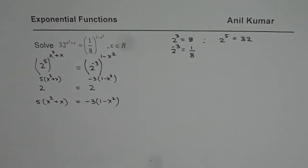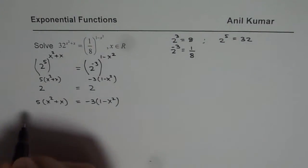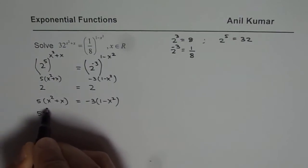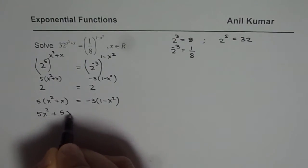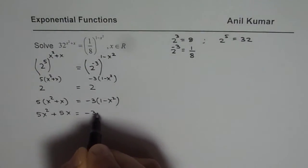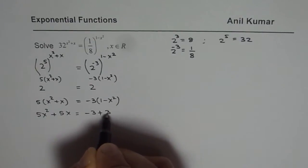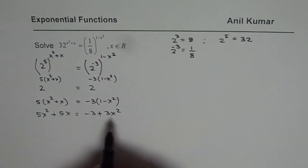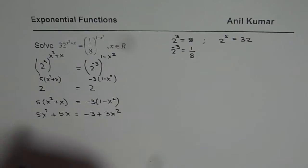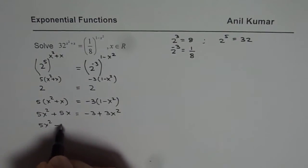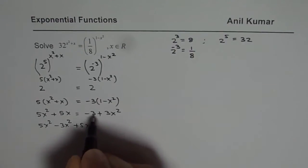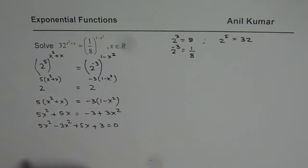So we get a quadratic equation to solve. Let us now solve this quadratic equation. Expand: 5x square plus 5x equals to minus 3, minus minus becomes plus 3x square. Bring all the terms together. So we have 5x square minus 3x square and then we have plus 5x plus 3 equals to 0.